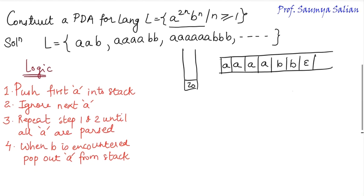The logic is: step one, on seeing the first a, push it into the stack. Step two, ignore the next a. Step three, repeat steps one and two until all a's are processed. Step four, when b is encountered, pop an a from the stack. Now let's construct the PDA machine. Given this example, my read head is reading the first a and the stack top is z₀.